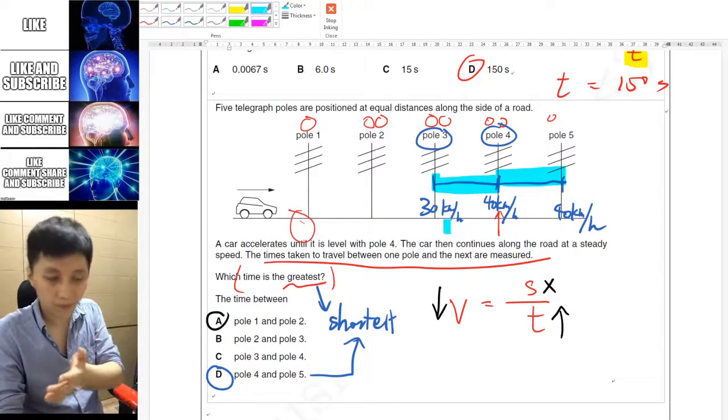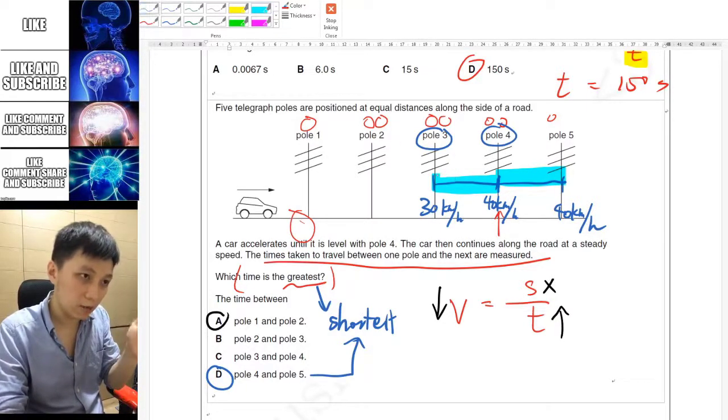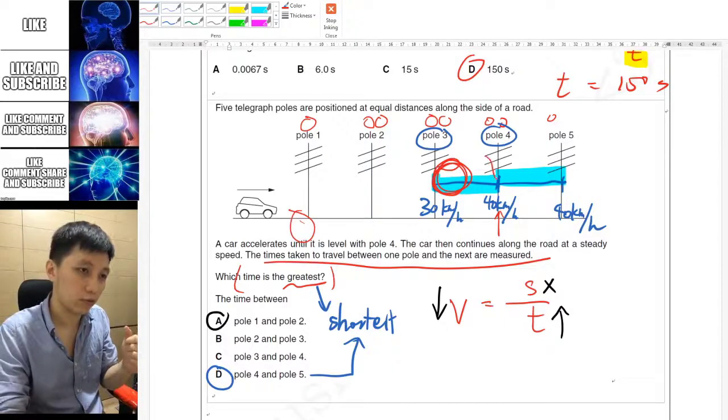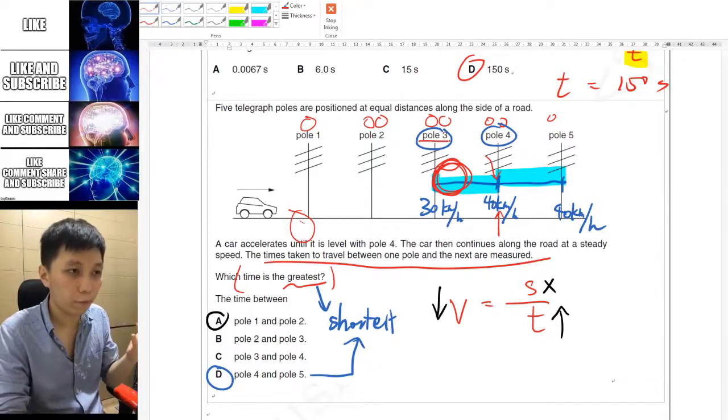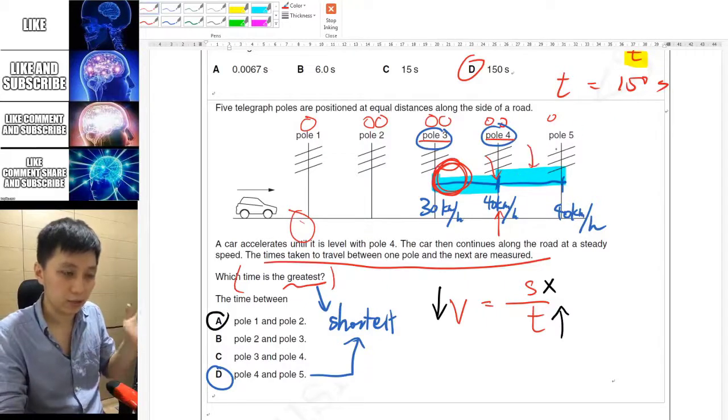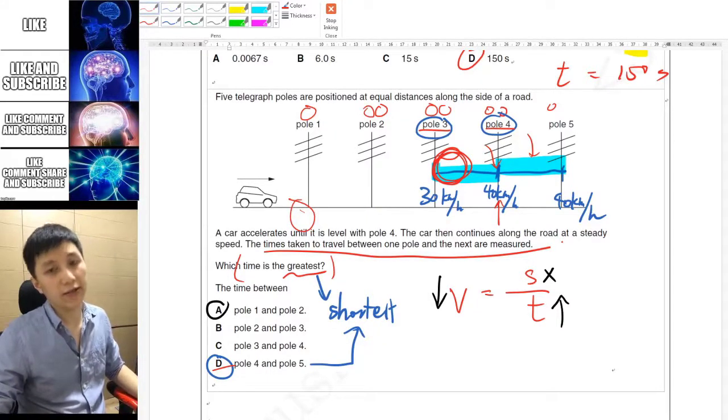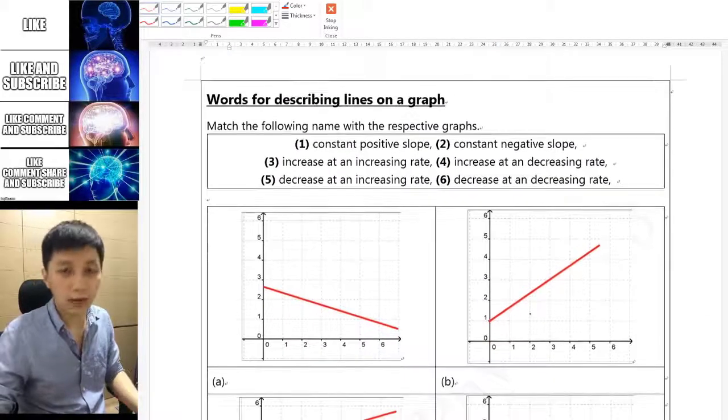Between pole 3 and 4 it is increasing the velocity, so maybe from 30 to 40. Of course it has to go from 30, 31, 32, 33, etc. until 40. So imagine the speed or velocity at the beginning, at the very beginning of this path. Of course it's less than 40. Actually only when you reach here then you are 40. So obviously the time between pole 3 and 4 will be longer because it is somewhat slower than the later section. So the answer would be D.